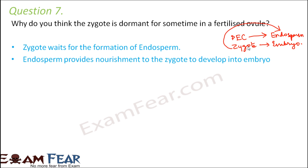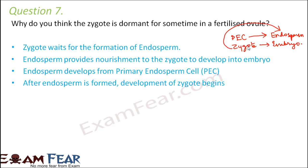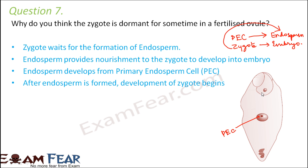So endosperm provides nourishment to the zygote to develop it into embryo. The endosperm itself develops from the primary endosperm cell. After the endosperm is formed, development of the zygote begins. So this is the primary endosperm cell and this is the zygote.